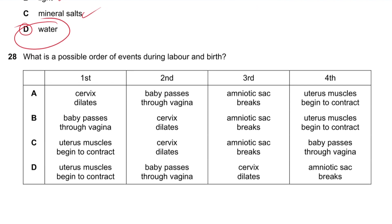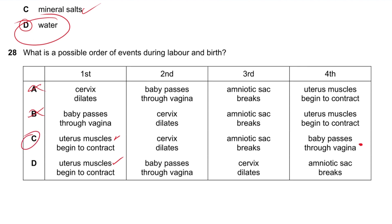Question 28: What is the possible order of events during labour and birth? First, the uterus muscles begin to contract — so it starts with C or D. Then the cervix dilates, then the amniotic sac breaks, then the baby passes through last. Answer is C.